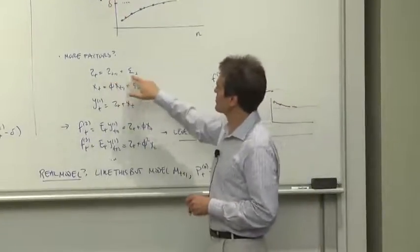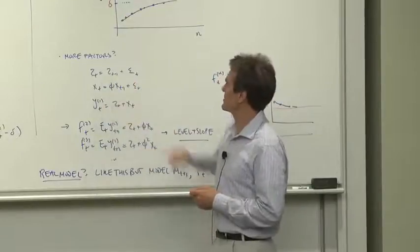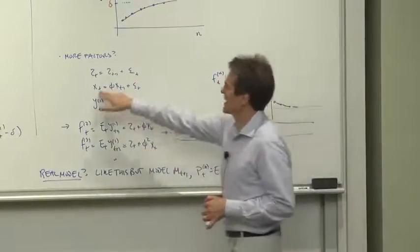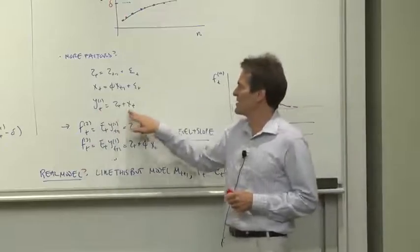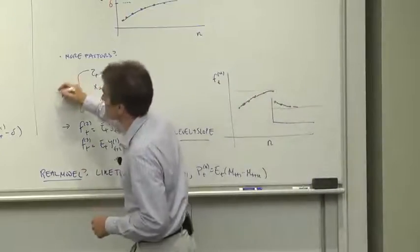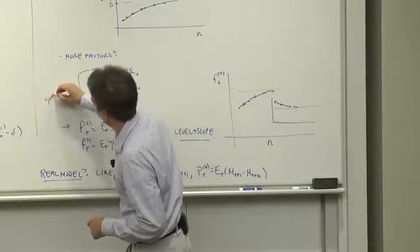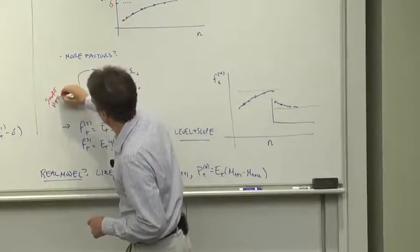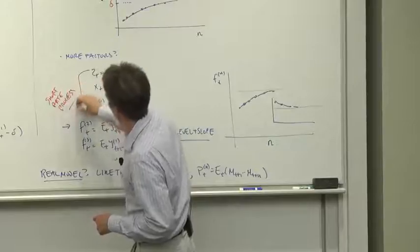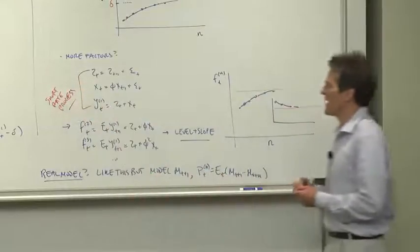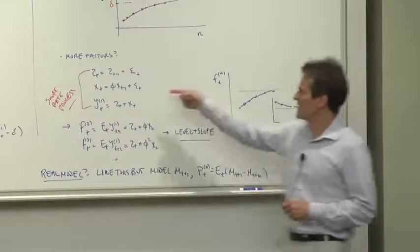Let's suppose there's two underlying factors. Z, which follows a random walk, and X, which follows an AR1. And then the one-year rate is Z plus X. So this three-equation system is now our short rate process. We've made an assumption, a model of how interest rates vary over time.